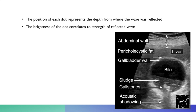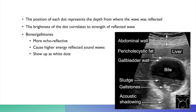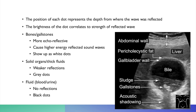Different tissues reflect waves differently. Things with a lot of calcium, like bones or gallstones, are very echo-reflective and cause higher energy reflected sound waves — they show up more white, as a more echo-bright image. Solid organs or thickened fluids have a weaker reflection and generally show up as grey, while blood or urine show very little reflection and appear darker on ultrasound.